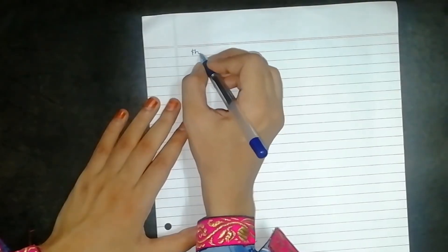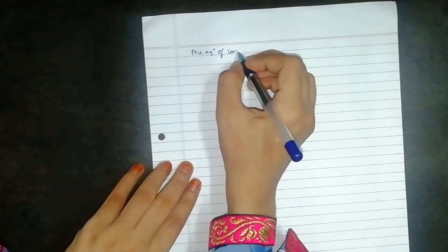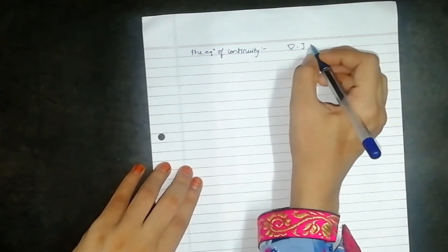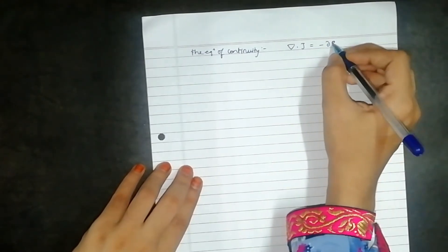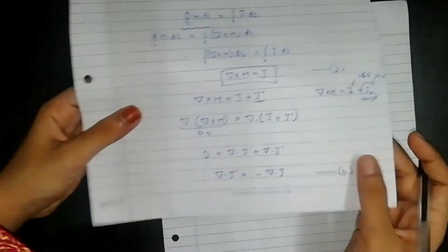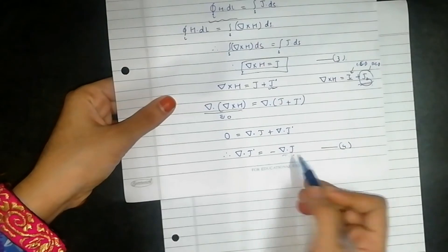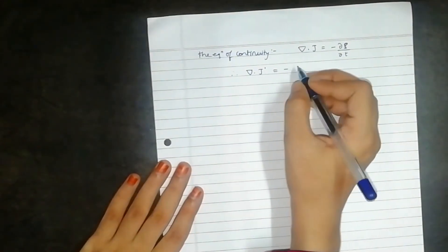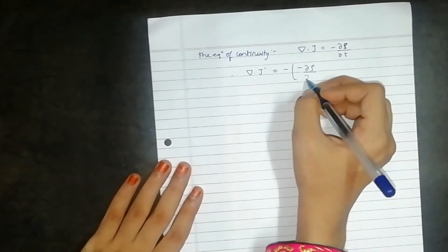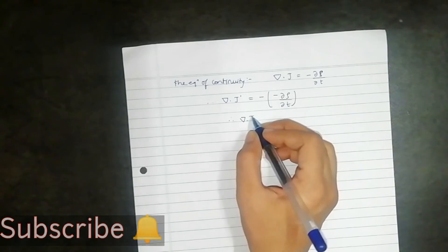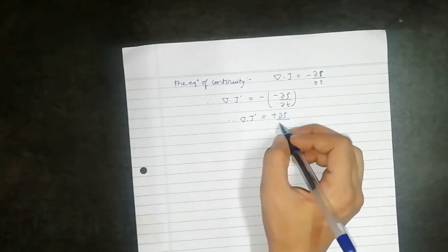Using the equation of continuity, ∇·J = −∂ρ/∂t. Substituting this value of ∇·J into equation four, ∇·J prime equals minus of (−∂ρ/∂t). Therefore ∇·J prime = +∂ρ/∂t. This is equation number five.